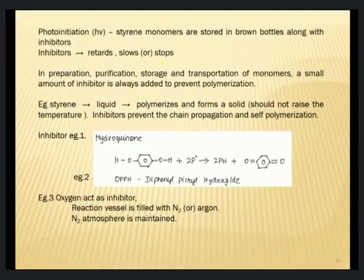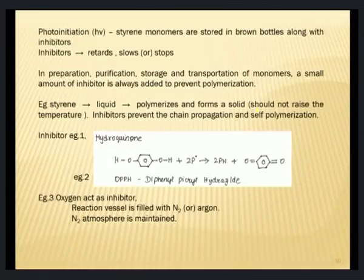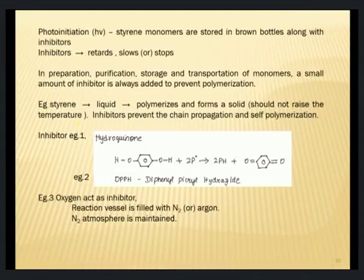Such inhibitors retard, slow, or stop polymerization from happening. Hence, in purification, storage, and transportation of very active monomers, a small amount of inhibitor is always added and must be removed before the monomer enters the actual polymerization bath. This is a pre-step required for very active monomers like styrene. Styrene, a liquid, polymerizes to a solid and even 35-40°C is sufficient to convert styrene monomers into polystyrene — hence inhibitors are always used to prevent such chain propagation and self-polymerization.